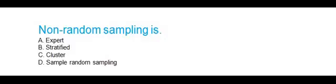Non-random sampling is: expert, stratified, clustered, or simple random sampling. The correct answer is expert. The sampling based upon convenience is: accidental, snowball, quota, or cluster. The correct answer is accidental.